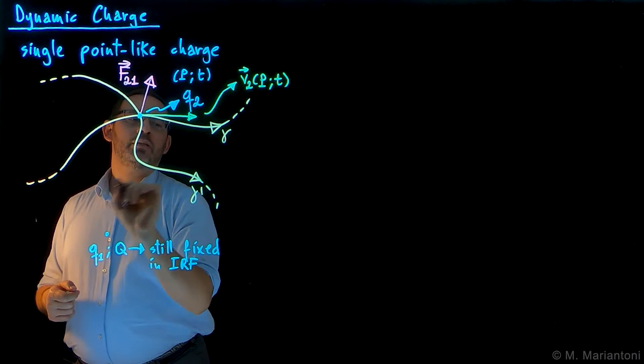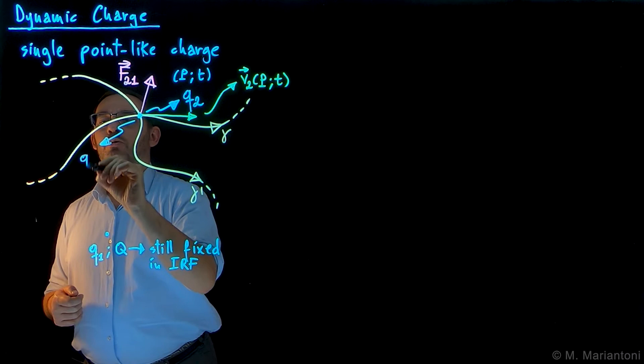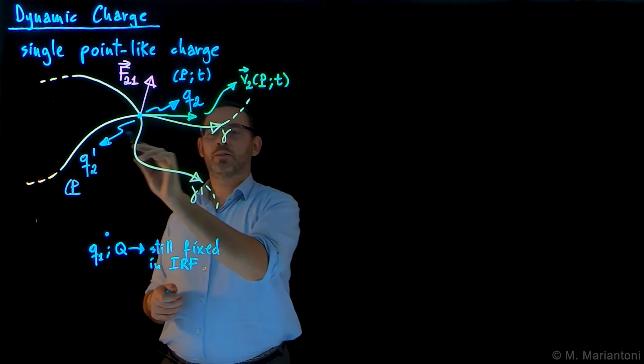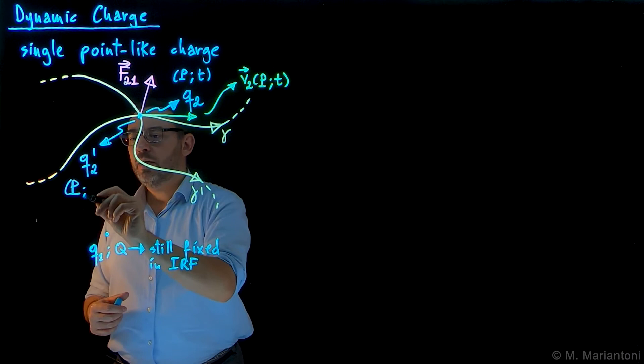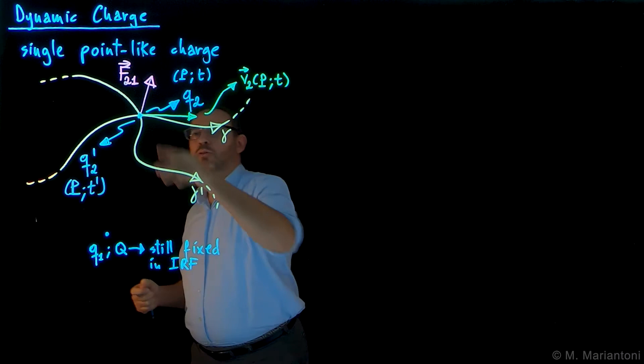Eventually it reaches this point P by this other time t prime. So eventually in this point along gamma prime I will have my charge particle q2 prime. But now the point is the same point P, because that's where the two curves, gamma and gamma prime, encounter each other - they share this point here which is P. But the time can be a time t prime, a different time. It doesn't have to be the same - we want it to be a different time.